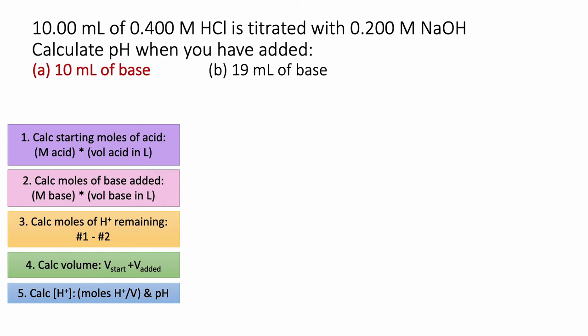We are doing a titration where we're titrating 0.4 molar HCl — we're going to put 10 mils in a beaker — and titrating it with 0.2 molar NaOH. If you do the math, the equivalence point (where there's an equal number of moles of HCl and NaOH) is going to be at 20 mils. Let's calculate the pH when you've added 10 mils of base, which would be halfway to our equivalence point.